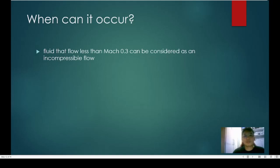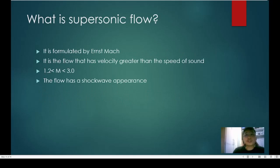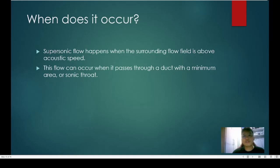When can it occur? Fluids that flow less than Mach 0.3 can be considered as an incompressible flow. Next is the supersonic flow. What is the supersonic flow? It is formulated by Ernst Mach. It is the flow that has velocity greater than the speed of sound. Mach number is greater than 1.2 but less than 3.0. The flow has a shockwave appearance. Supersonic flow happens when the surrounding flow field is above acoustic speed.